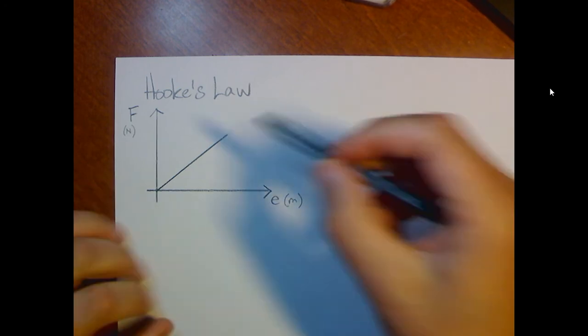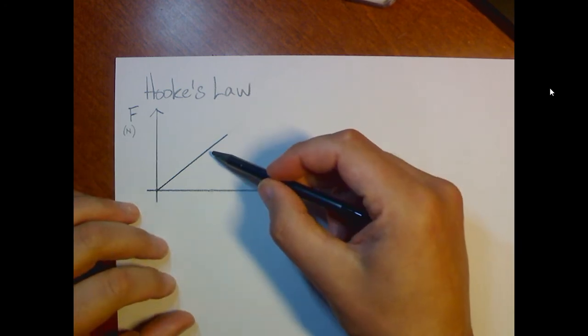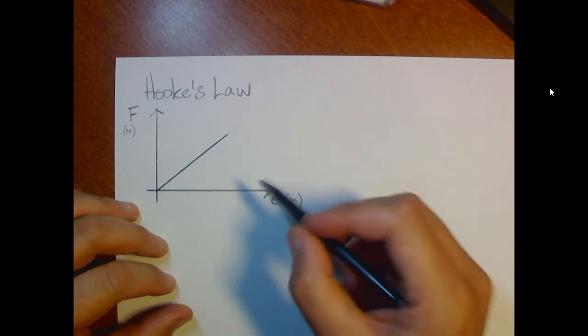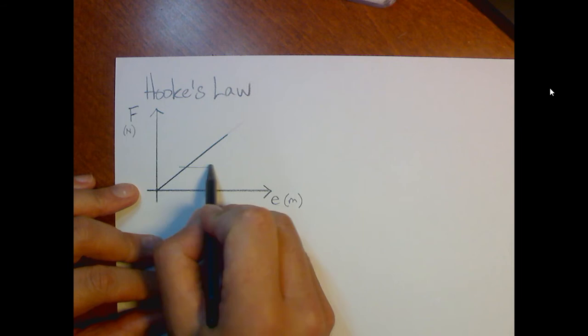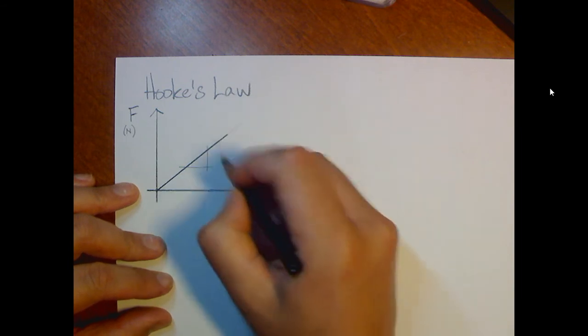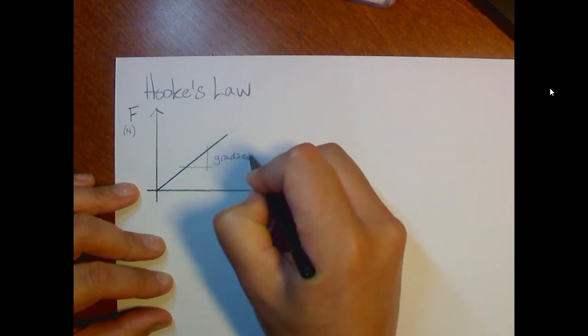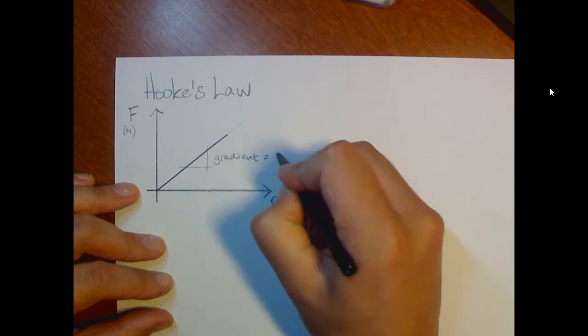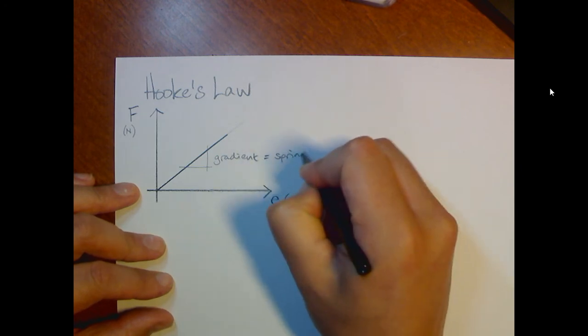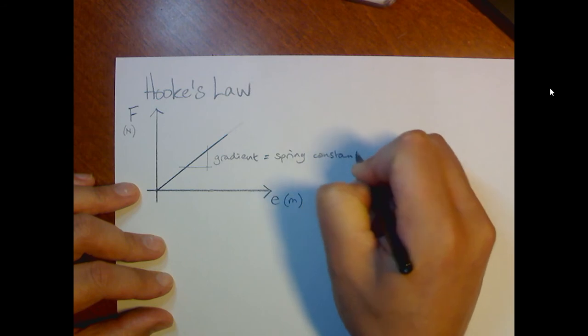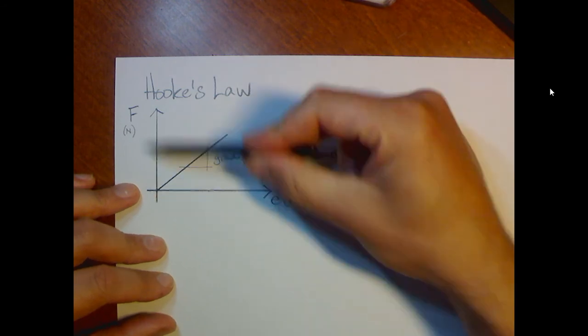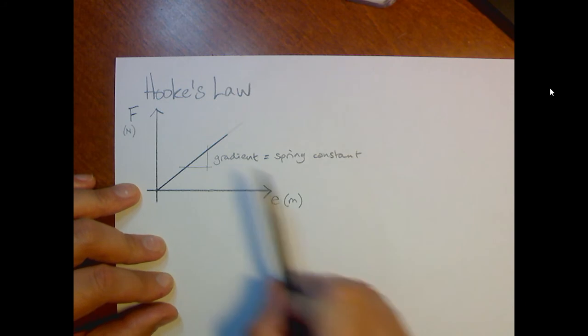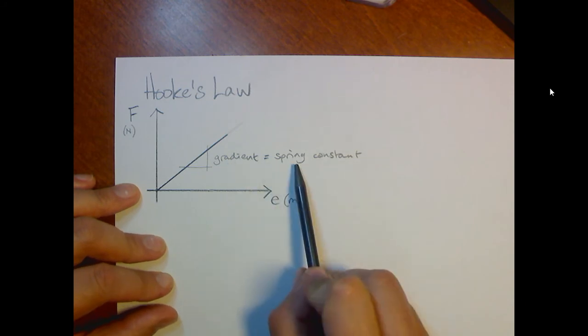And remember, a high spring constant means the spring is very stiff and it will not stretch so far. Now, let's just look at this graph to start with without any values. I asked you to work out the gradient. And if you did that, I'm hoping that you noticed that the value for your gradient is equal to the spring constant.